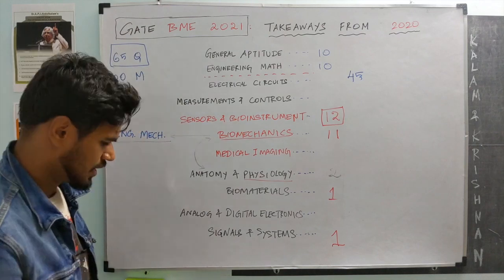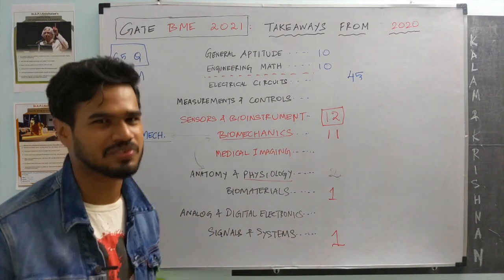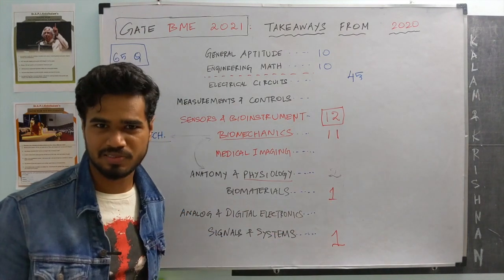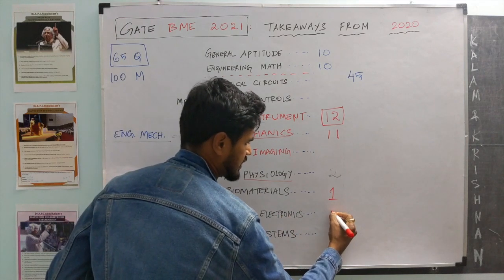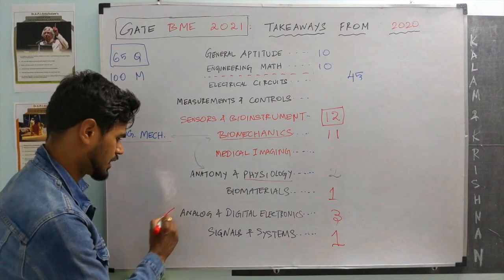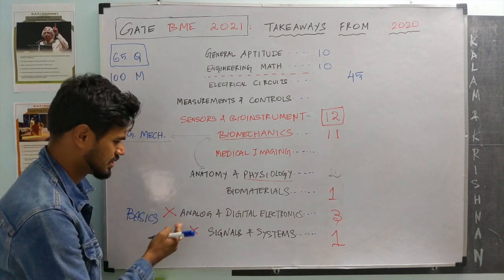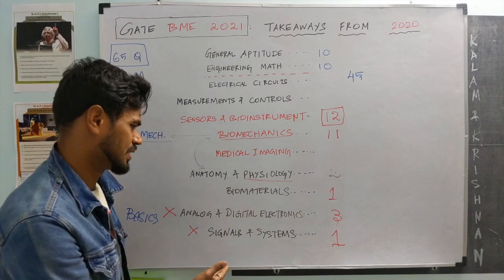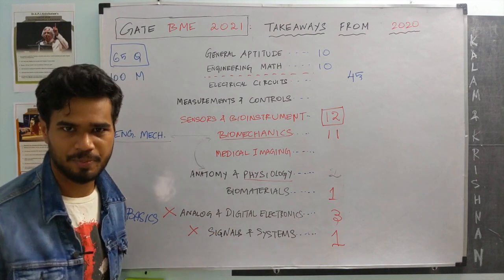I had suggested it would be safe to skip analog and digital electronics because there are so many topics and possible questions — I thought skipping a full topic would cost five or six questions. In reality, only three questions showed up from analog and digital electronics. So yes, it is a good idea to skip analog and digital electronics and signals and systems, but make sure you know the basics: diodes, op-amps, standard signal conditioning circuits, simple logic gates, logic expressions, and DAC converters.